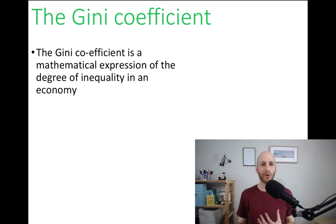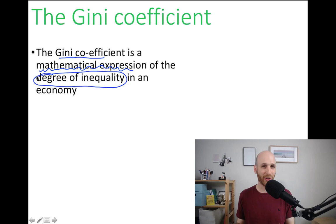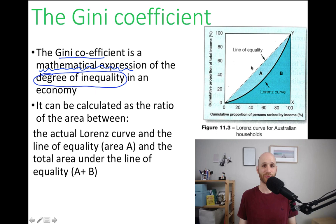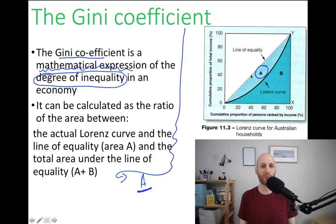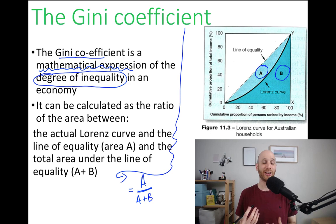If we talk about the Gini coefficient, what we can do is give this inequality a number — it's a mathematical expression that tells us in numerical form how unequal income or wealth distribution is in an economy. The Gini coefficient is equal to the distance between the line of perfect equality and the Lorenz curve over the total area underneath that line of perfect equality. So the Gini coefficient equals A over A plus B, and that tells us the degree of inequality in an economy.